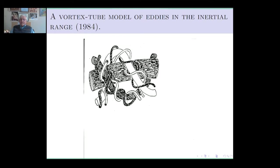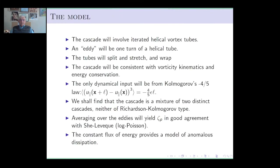Now I want to turn to the model at hand. This is work with my long-time colleague and collaborator Andrew Gilbert, done a couple of years ago. Let me summarize the model right here. What Andrew and I decided to do was to consider helical structures — this was really just a way of encoding scale — so you could say that one turn of the helix is an eddy in this picture.